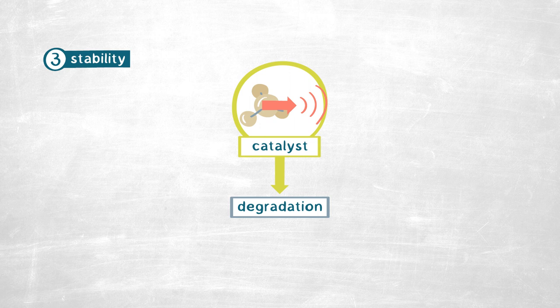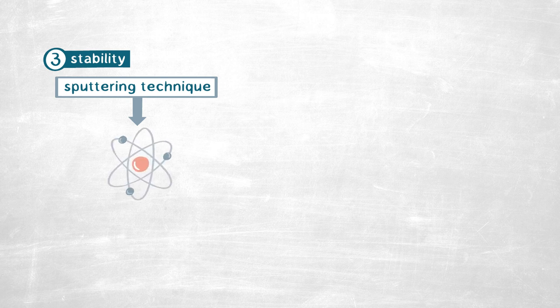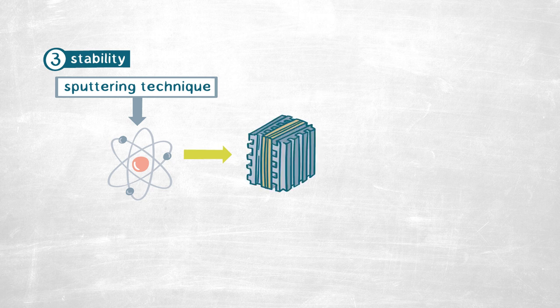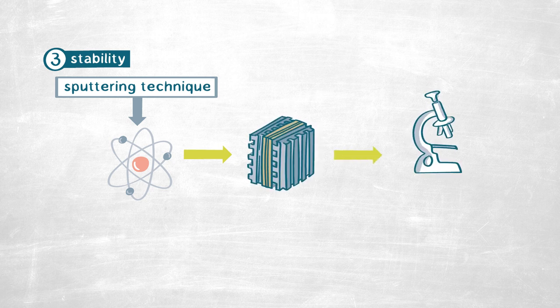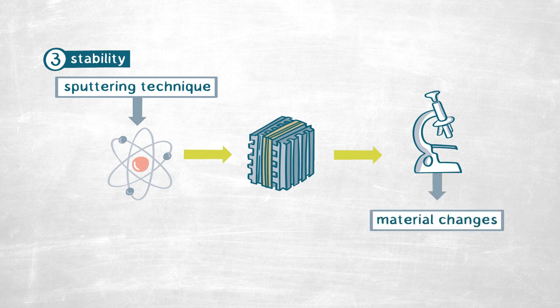For this, what we want is to take our material just after the sputtering technique, after synthesis. We want to simulate the same conditions that we have inside of the fuel cells and we want to look again, thanks to our electron microscope, to see which are the changes. Do we have a new composition in these new materials? To learn about these degradation mechanisms and optimize them to increase the efficiency of the fuel cells.